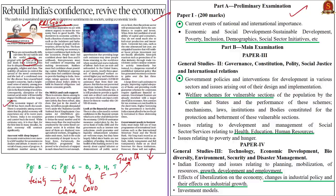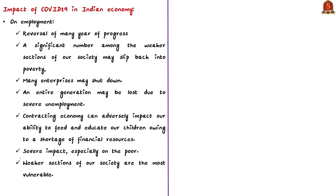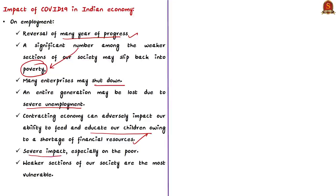When we talk about the contraction of GDP, it means the reversal of many years of progress. A significant number among the weaker sections of society may slip back into poverty. Many companies may shut down and an entire generation may be lost due to severe unemployment. A contracting economy can adversely impact our ability to feed and educate our children, owing to shortage of financial resources. This effect will have a severe impact on vulnerable and poor people.